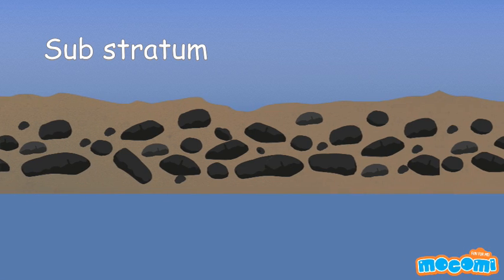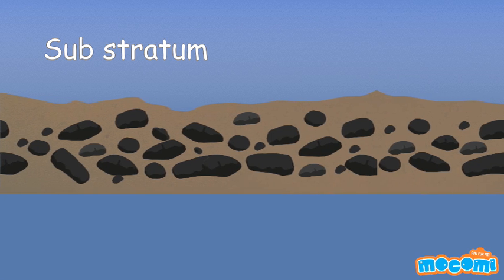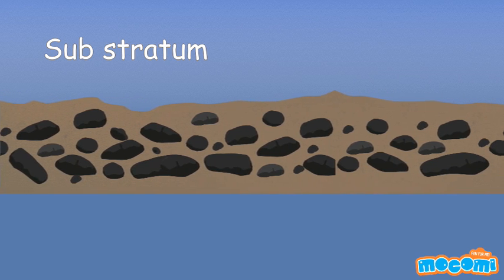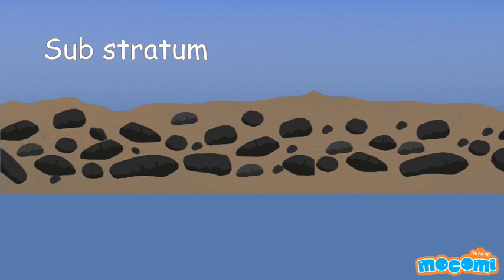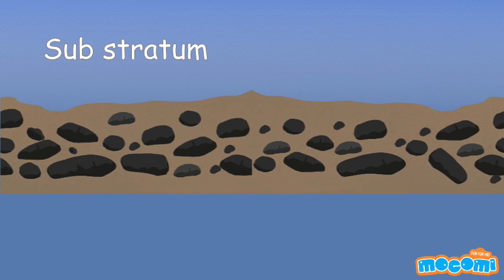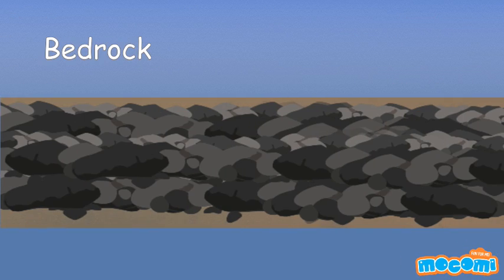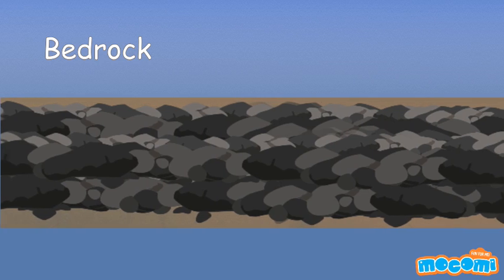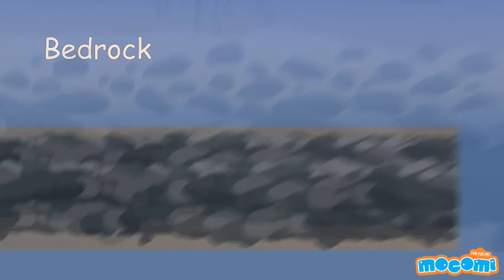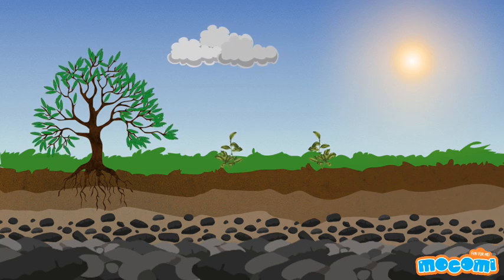Substratum: The layer of soil just below the subsoil is called the substratum. It mainly consists of partially broken or weathered rocks. These rocks keep breaking from the bedrock, which is just below the substratum. It is this bedrock that has produced soil over a long period of time.